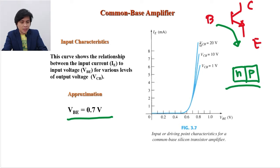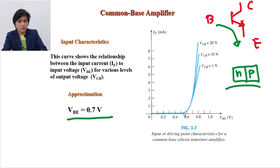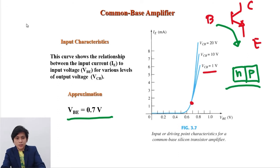There is still no current output IE whenever the voltage VBE is less than 0.7V. It starts to conduct at 0.5V, but that is a very small amount of IE — not enough as a substantial output. We get a substantial amount of IE at the 0.7V level of VBE.